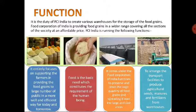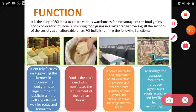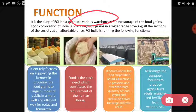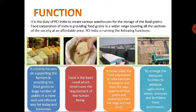Functions of the Food Corporation of India include creating various warehouses for the storage of food grains. FCI provides food to all sections of society at affordable prices. It entirely focuses on supporting the farmers and providing food grains to a large number of the public in a more efficient way — purchasing excess food grains from farmers and ensuring they reach the public.